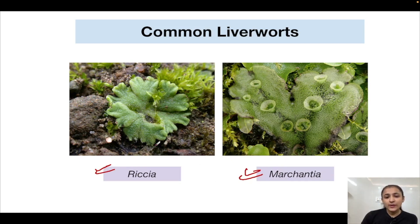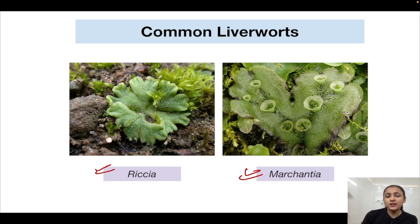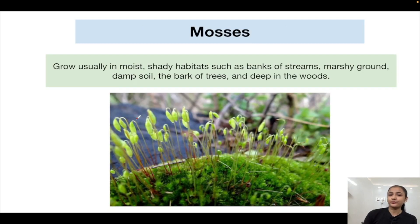Common examples of liverworts are Riccia and Marchantia. Riccia also has a liver-like appearance similar to Marchantia. That is why the name 'liverworts' is given to them — their shape resembles that of a liver.